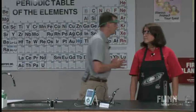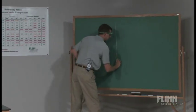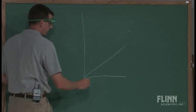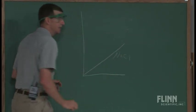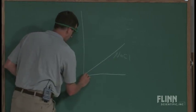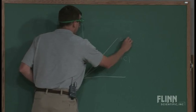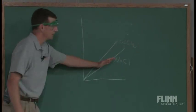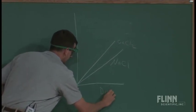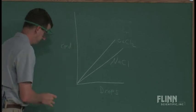If we look at it on the board for a comparison's sake, if I draw a slope of the sodium chloride, it gives me a certain slope because of the two ions, two moles of ions per mole of solid. If I look at calcium chloride, it gives me a little steeper slope if I'm looking at the number of drops versus the conductivity.